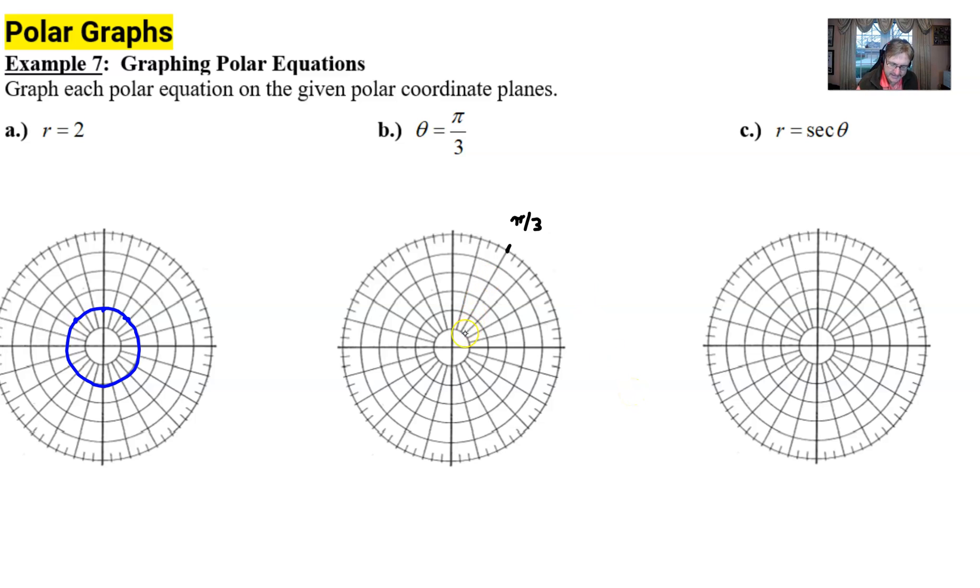Now you simply say any r value along that spoke, whether positive or negative on this side, would be the correct depiction of the curve. You could put arrows there because this graph goes on forever. We could have as many concentric circles as we want. That's what theta equals pi over 3 looks like.